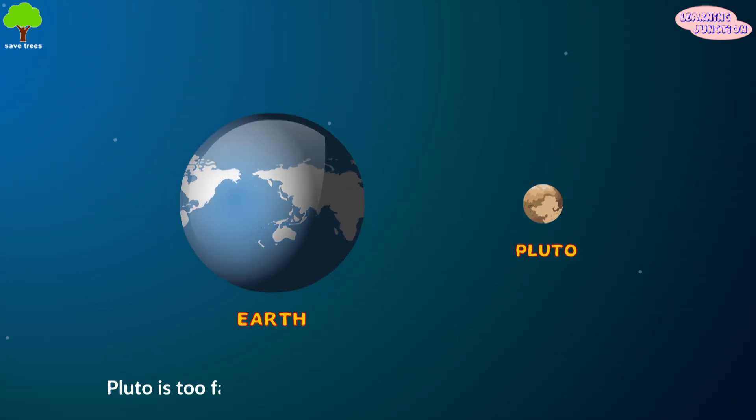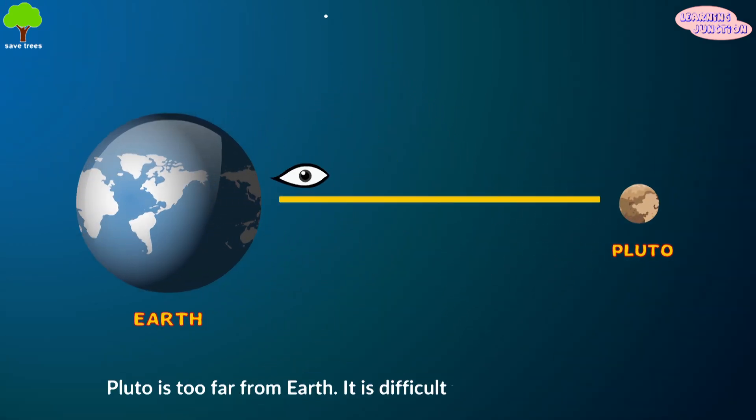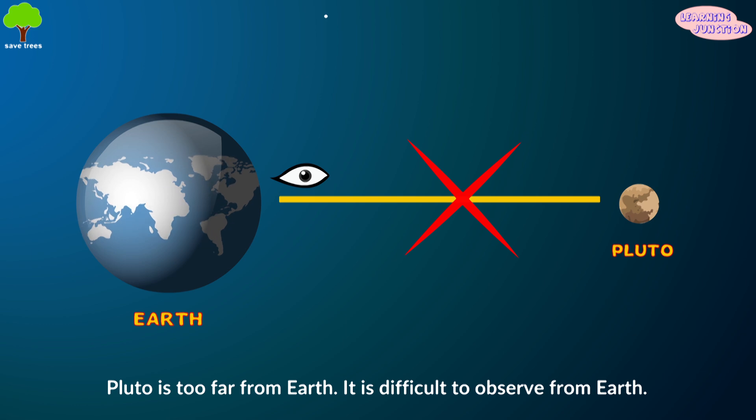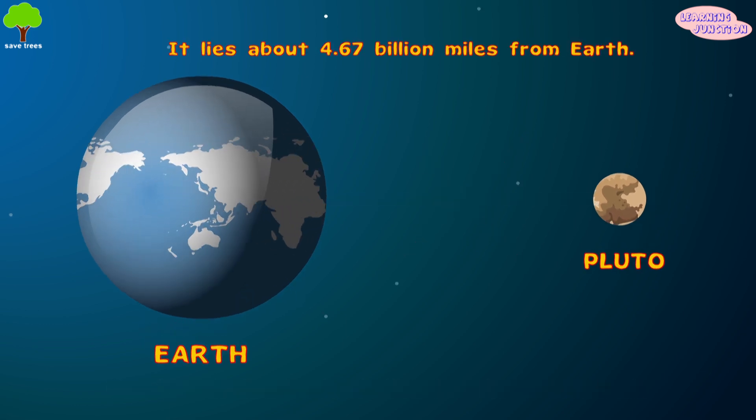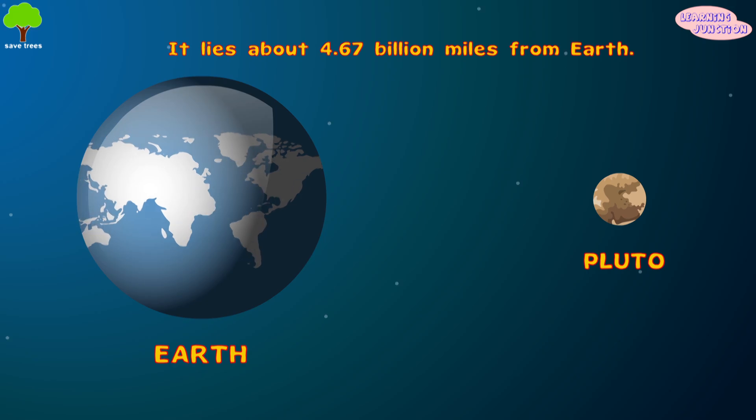Pluto is too far from Earth and difficult to observe, even with amateur telescopes. It lies about 4.67 billion miles from Earth.